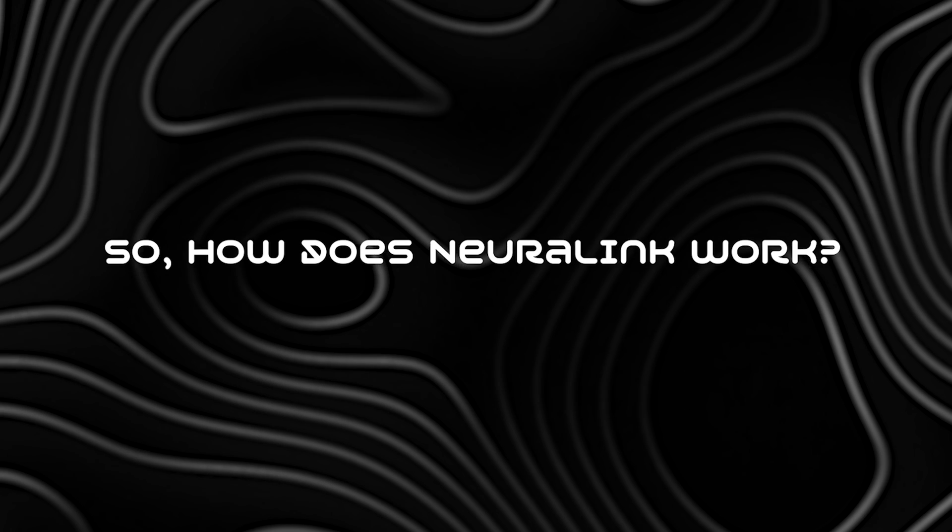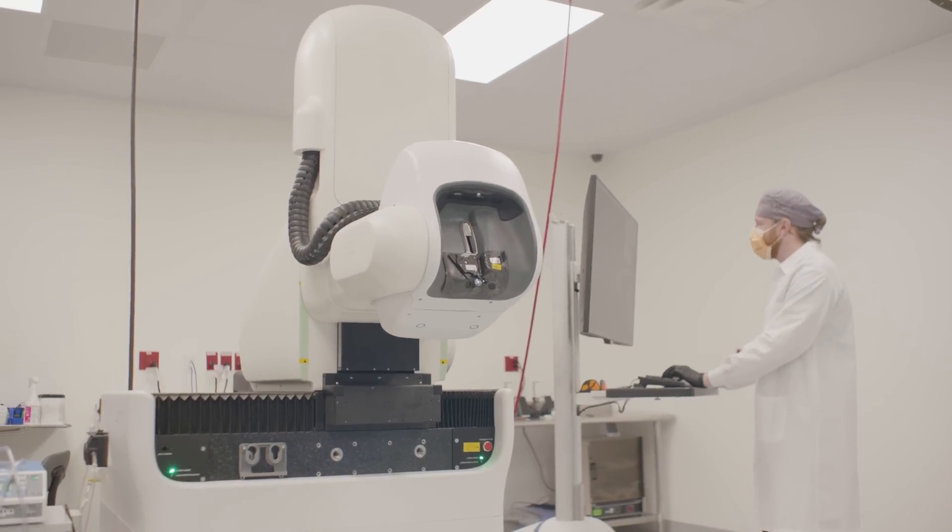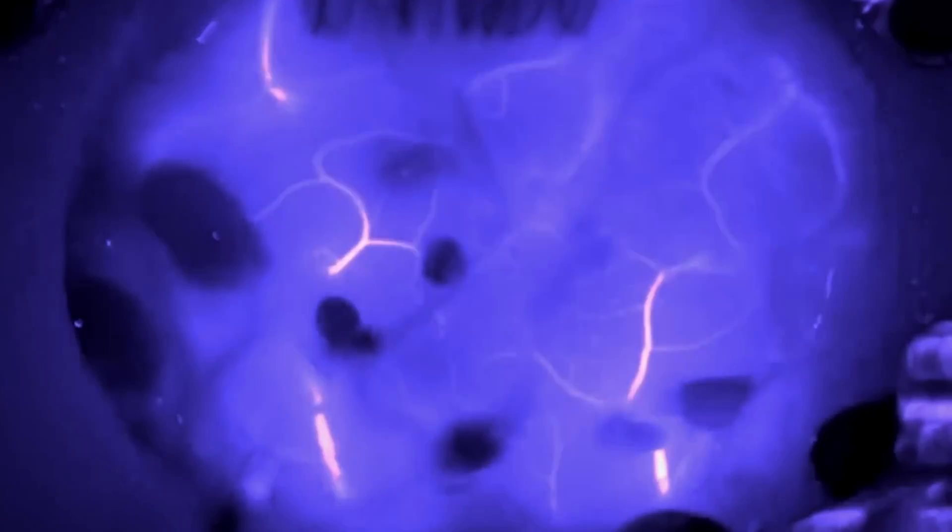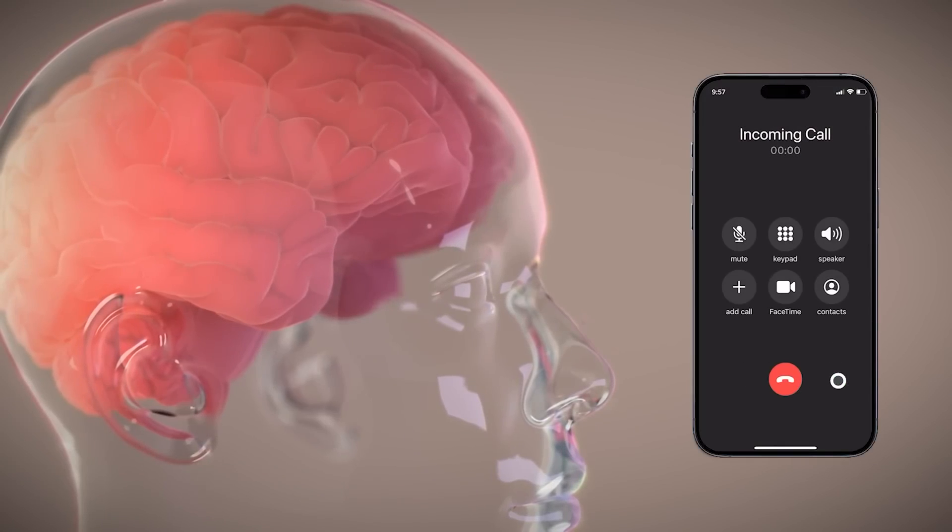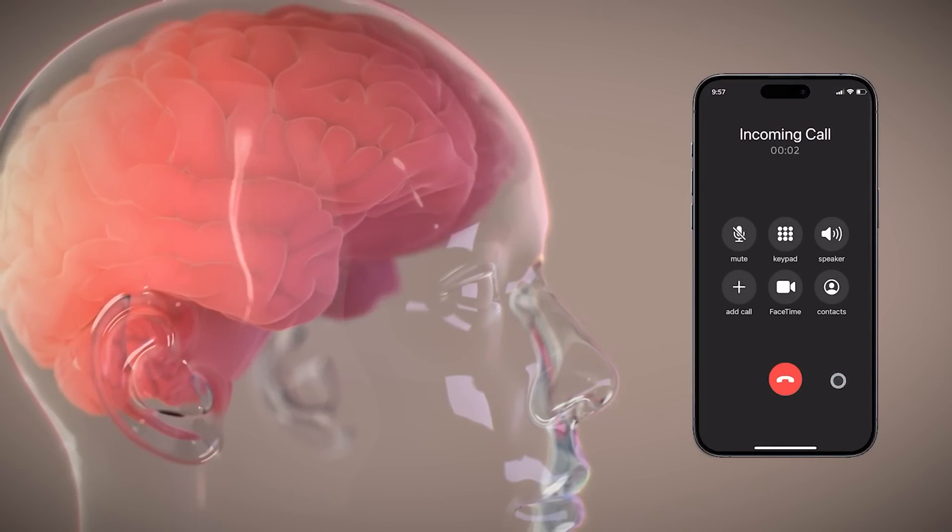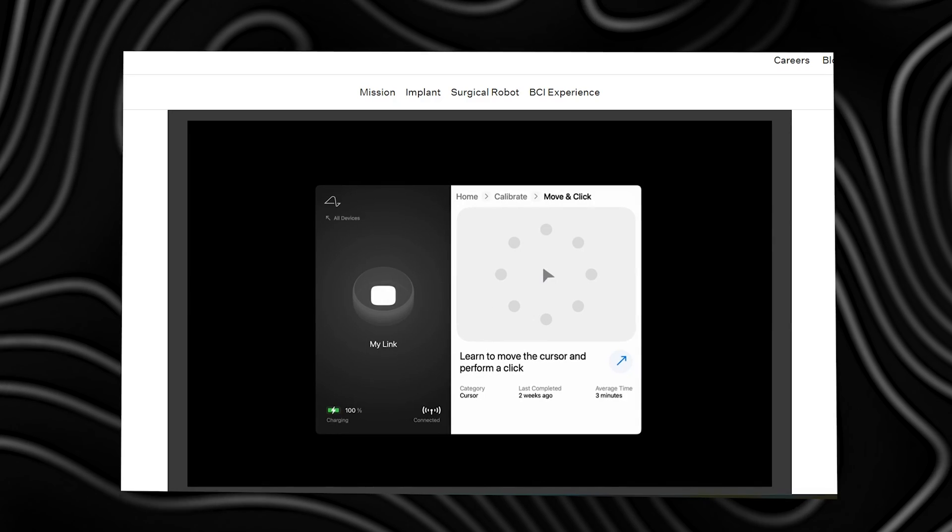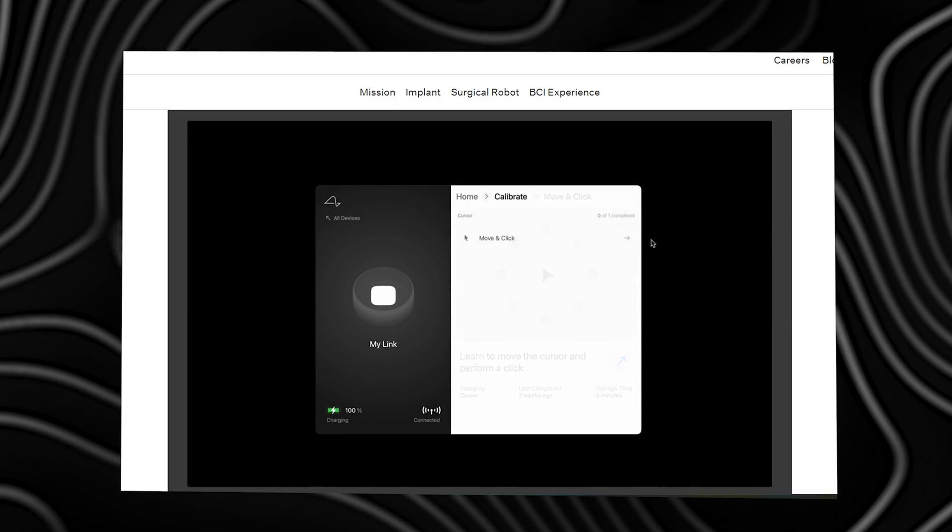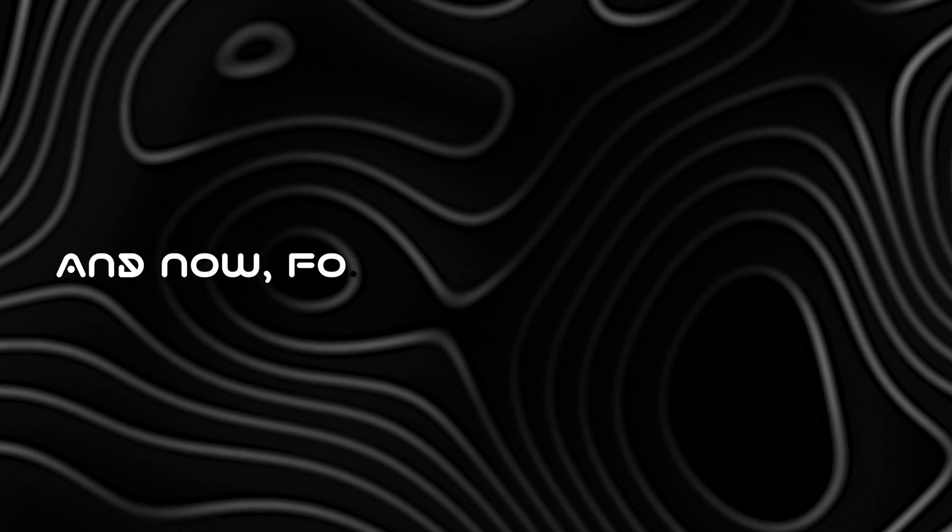So, how does Neuralink work? The Link, a coin-sized brain chip, is surgically implanted under the skull, receiving information from neural threads in different sections of the brain. These threads have sensors capable of recording and emitting electrical currents, creating a direct interface between the brain and computers. The technology captures brain activity, interprets it as actions, and utilizes machine learning algorithms to make sense of the information.